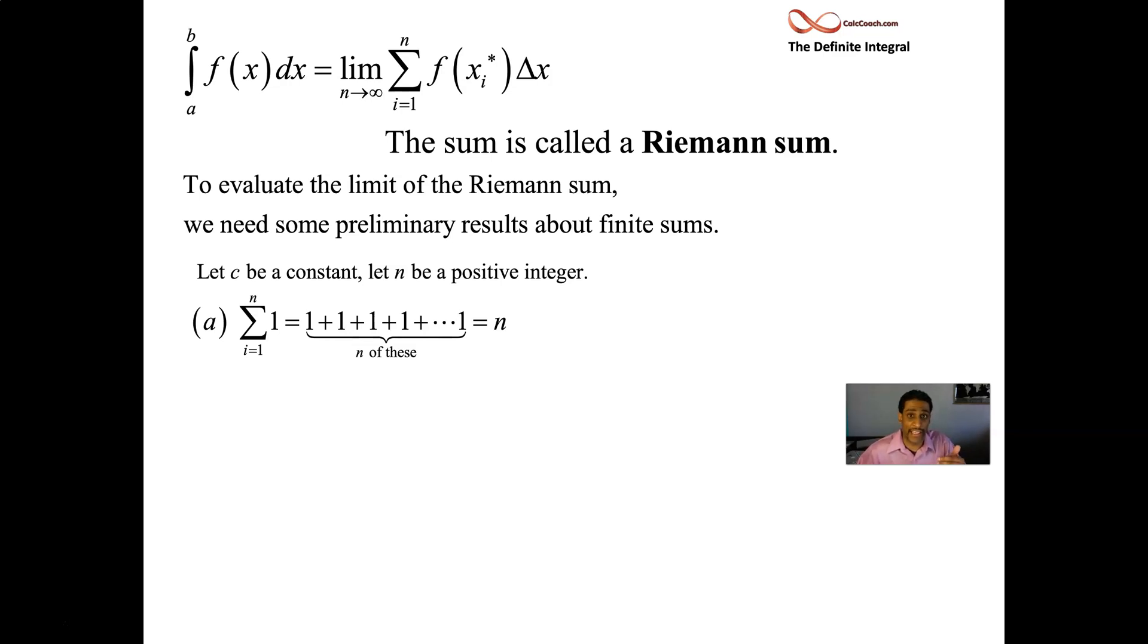Next, we'll move to adding up instead of a bunch of constants, we'll let it change on the inside. So add one plus two plus three plus four and then stopping someplace at n. If we were to stop at 10, then we'd add up the numbers from one to 10. The answer would be 55.